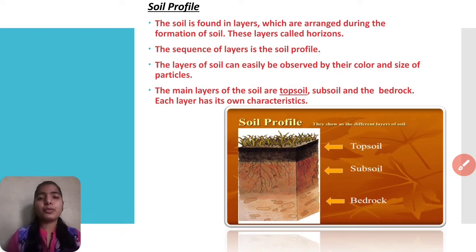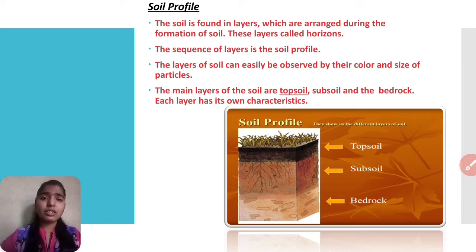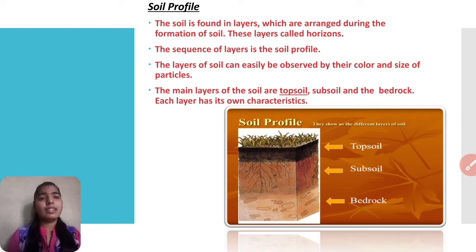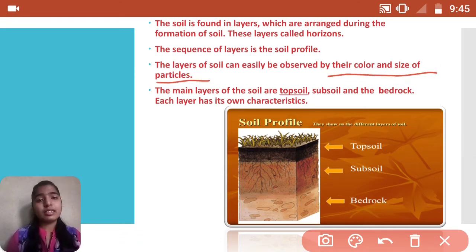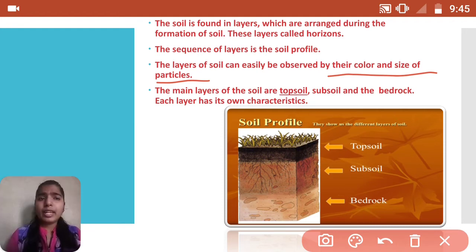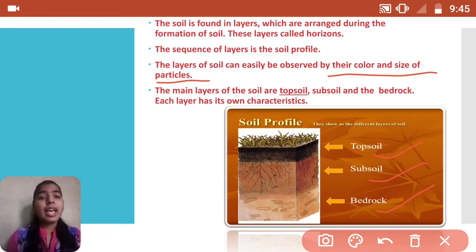Next, what is soil profile? Soil is found in many layers. We can see only the topmost layer, but it has many layers arranged during the formation of soil. We call these layers horizons. The sequence of horizons is called the soil profile. The layers can be differentiated by their color and size of particles. The main layers are topsoil, subsoil, and bedrock, each with its own characteristics.